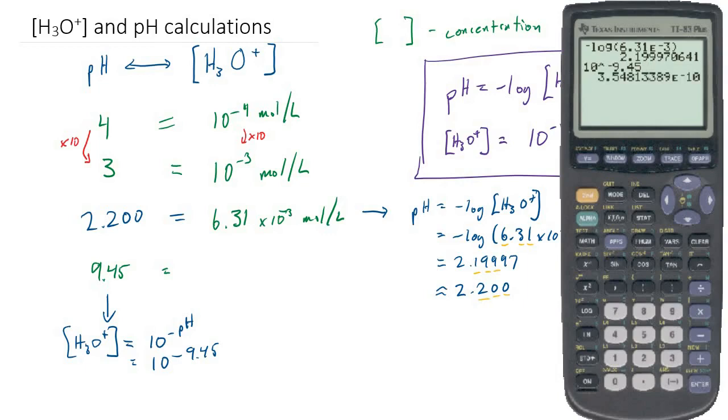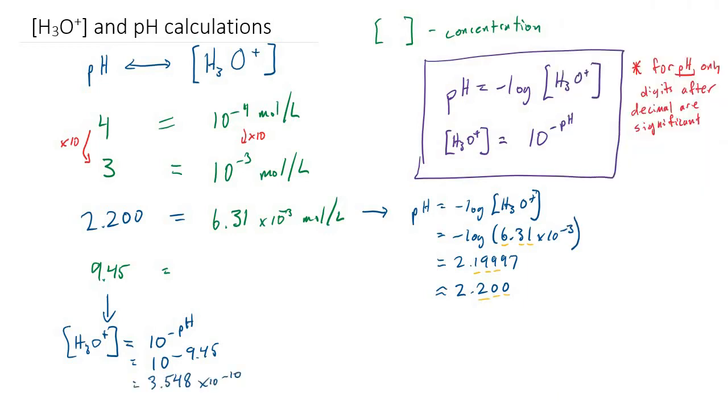And we get 3.548 times 10 to the negative 10. And so again let's invoke our significant digits rule here. 9.45 is a measurement of pH. So only the digits after the decimal are significant. The 4 and the 5. So that's 2 significant digits. So to get 2 significant digits we're going to round this to 3.5 times 10 to the minus 10. And our concentrations are in moles per liter.